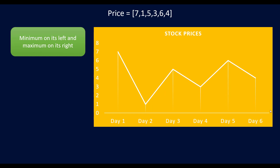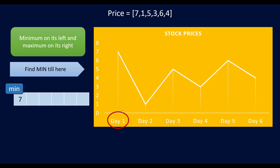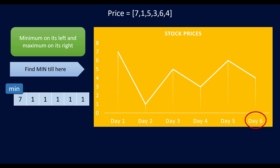We are going to find a price in the future that is higher than the lowest price found so far. We need to find the minimum price on the left and the maximum price on the right. This can be done using extra space — an array for storing the minimum to its left. We start filling the min array: on day 1 the minimum is 7, on day 2 it becomes 1, and on day 3 it remains 1, and so on until we reach the end.